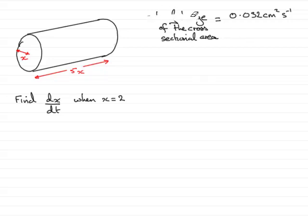This can be written as the rate of change of area with respect to time is dA by dt where A is going to be the cross sectional area.